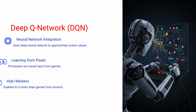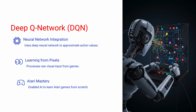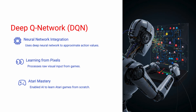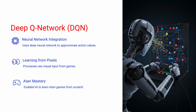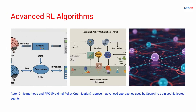One famous algorithm is DeepMind's Deep Q-Network, or DQN. By harnessing deep neural networks to approximate the value of actions from raw input, an AI can learn complex tasks like playing Atari games from scratch. Other advanced methods include actor-critic strategies and proximal policy optimization, commonly known as PPO. These techniques enable an agent to balance exploration and exploitation more effectively, further enhancing its learning capabilities.